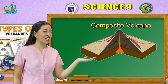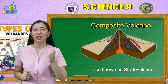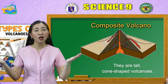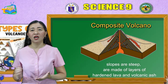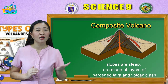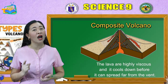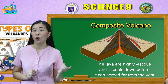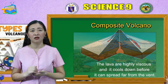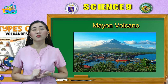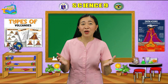Third, composite volcanoes, also known as stratovolcanoes. They are tall, cone-shaped volcanoes. The slopes are steep and are made of layers of hardened lava and volcanic ash. The lava that flows from stratovolcanoes is highly viscous, which is why it cools down before it can spread far from the vent. Mayon is an active composite volcano located in Albay.